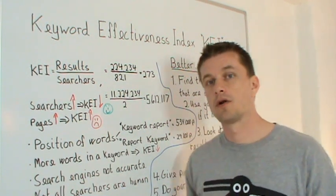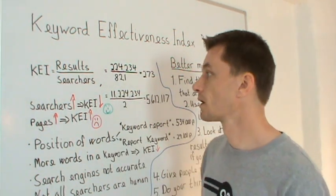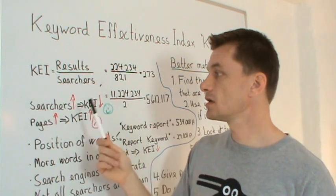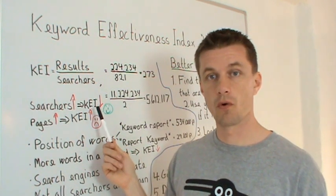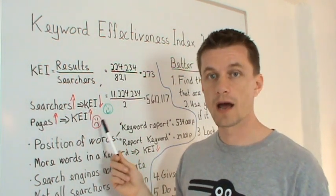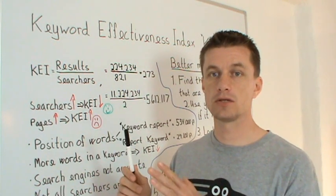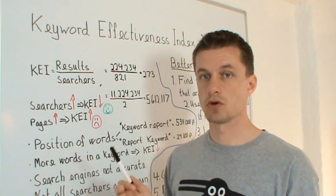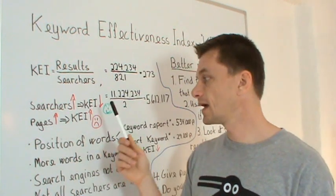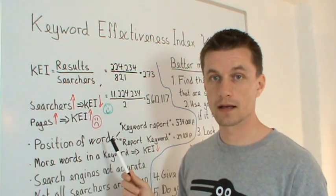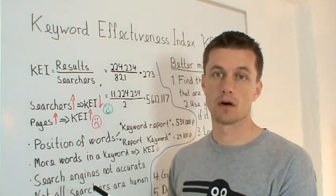Let's look a little bit closer on what happens when the numbers change. If you look at the searches here and we say the number of searches is going to increase, then the KEI will fall. And we are happy about that because a low KEI means that there is less pages competing for each searcher. If the number of pages increase then the KEI will increase as well. We don't like that because that means more pages competing for the same number of searches.